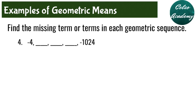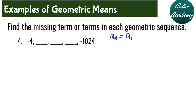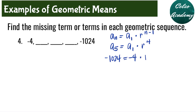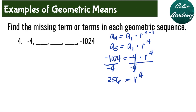Question number 4: find the three missing terms in the geometric sequence. We solve for r using a sub n is equal to a sub 1 times r to the power of n minus 1. For question number 4, we also have five terms, so a sub 5 is equal to a sub 1 times r to the power of 4. A sub 5 is negative 1024, and our a sub 1 is negative 4, giving negative 4 times r to the fourth power. Dividing both sides by negative 4, we get 256 equal to r to the fourth power. Taking the fourth root of both sides, the fourth root of 256 can be positive 4 or negative 4.